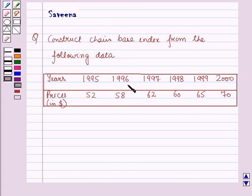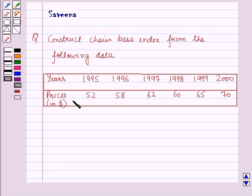The data is given to us in which the years are given as 1995, 1996, 1997, 1998, 1999, and 2000, and the corresponding prices in dollars in the particular years are given as 52, 58, 62, 60, 65, and 70.